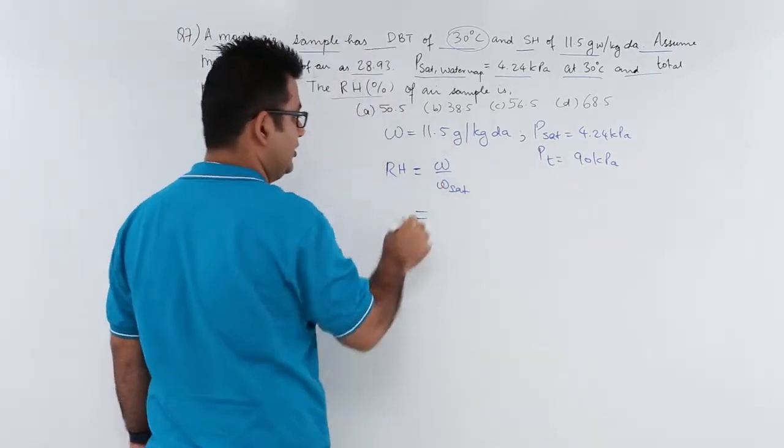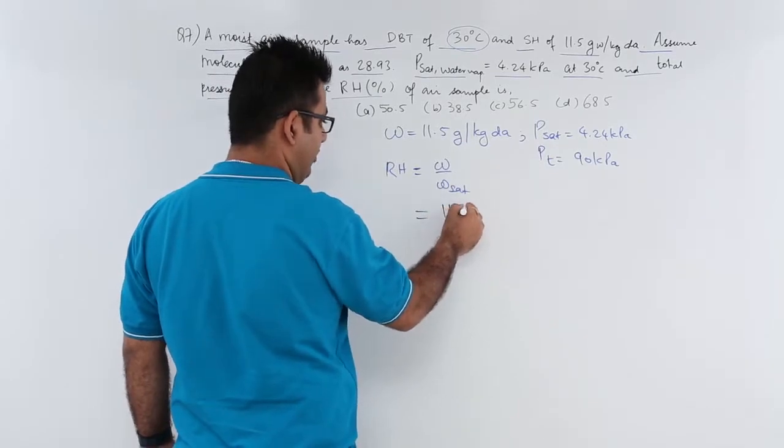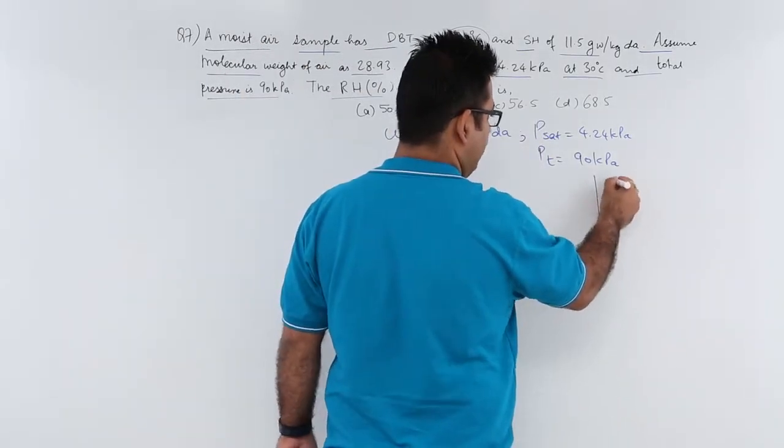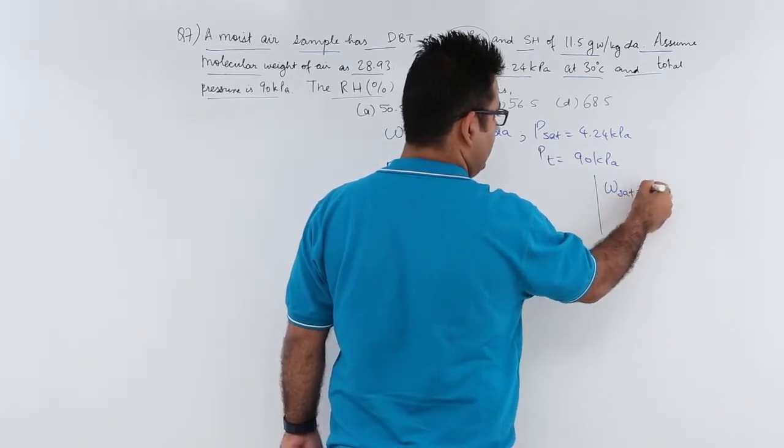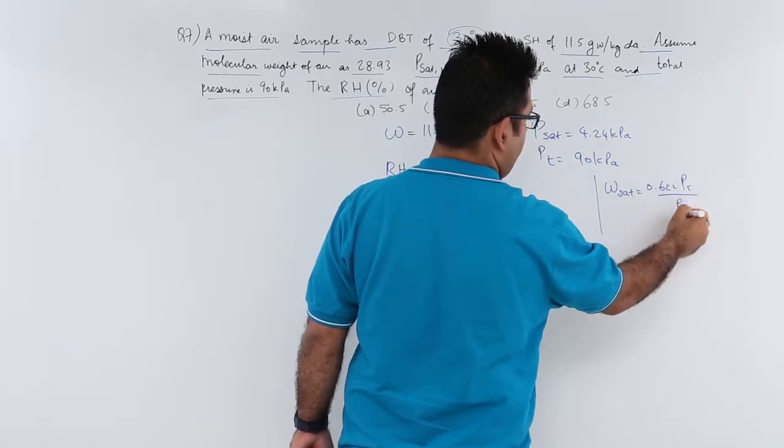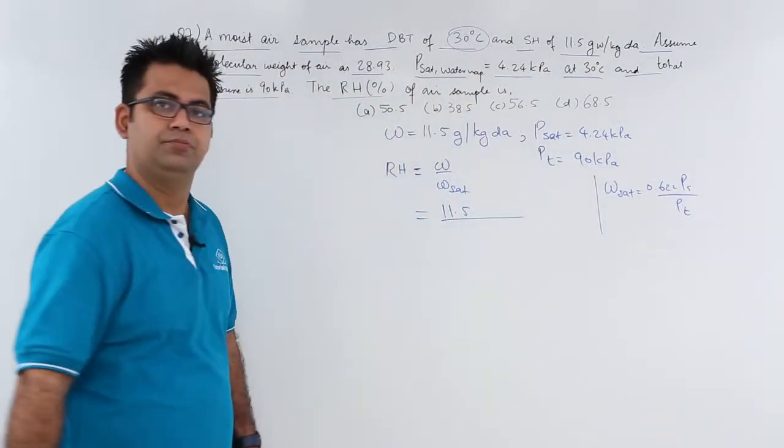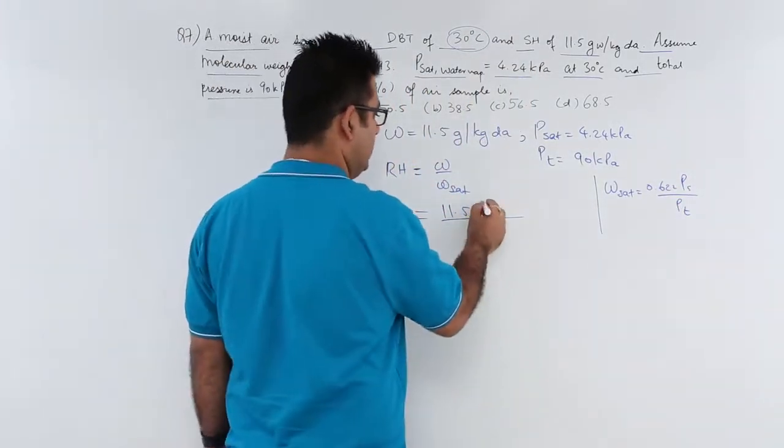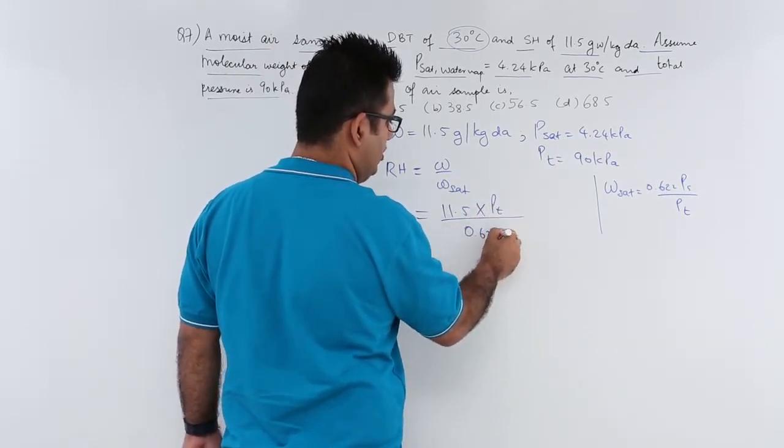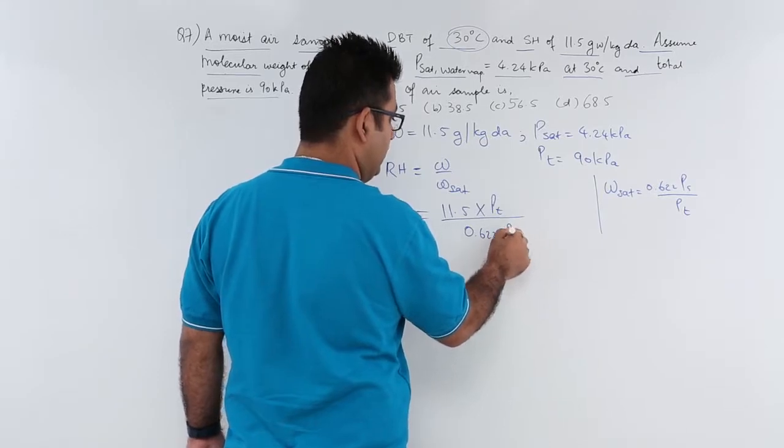Now if you find this value, this is omega which is 11.5. Omega saturated would be if you write down the value for this 0.622 into p saturated upon total. You will have p total upon 0.622 into the saturation pressure.